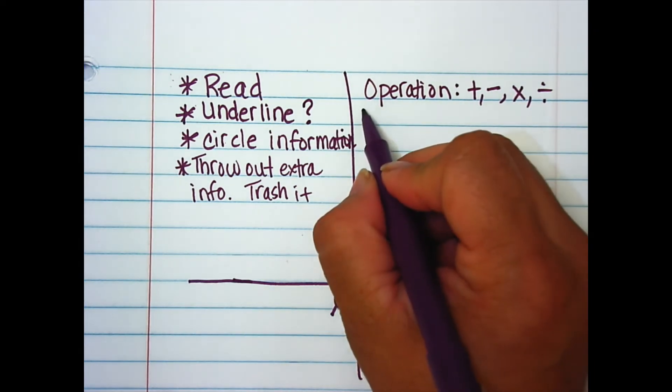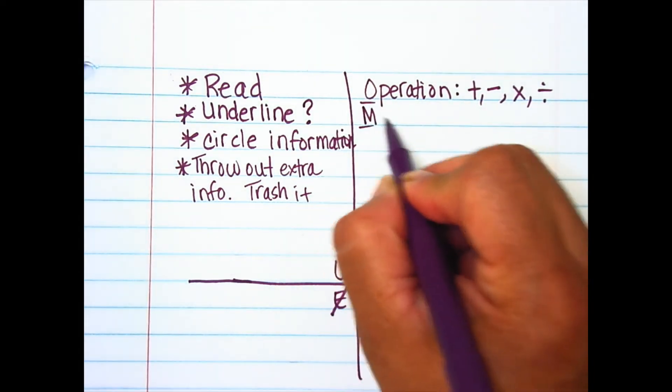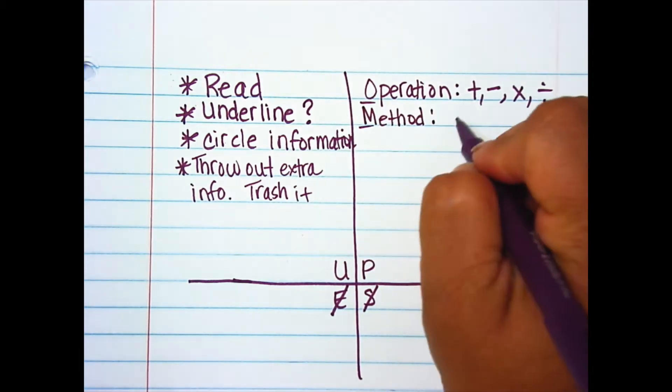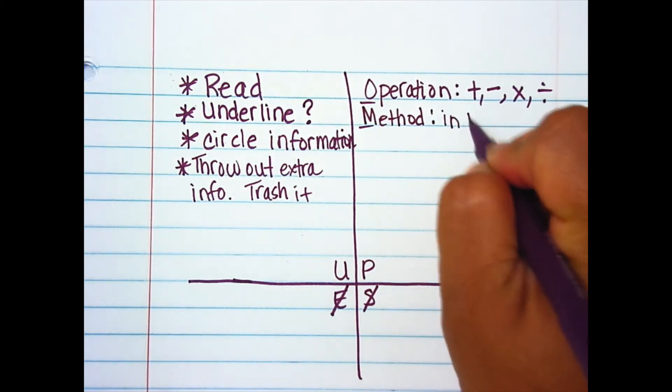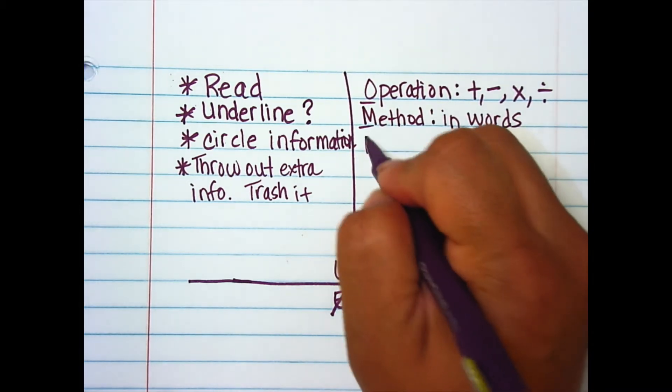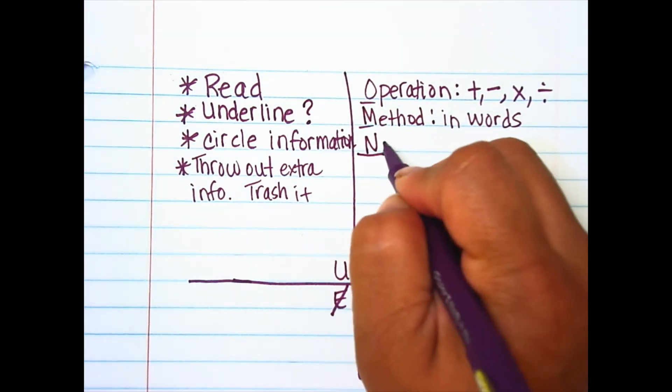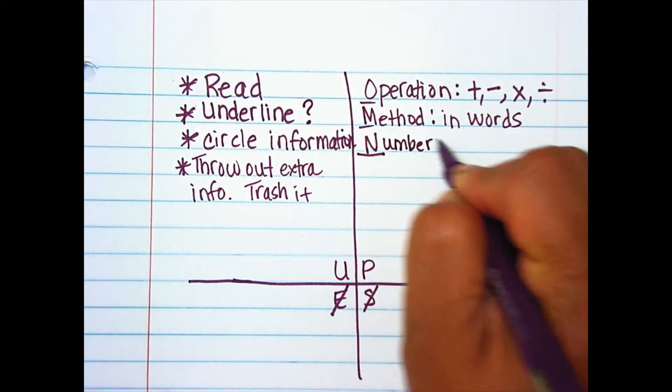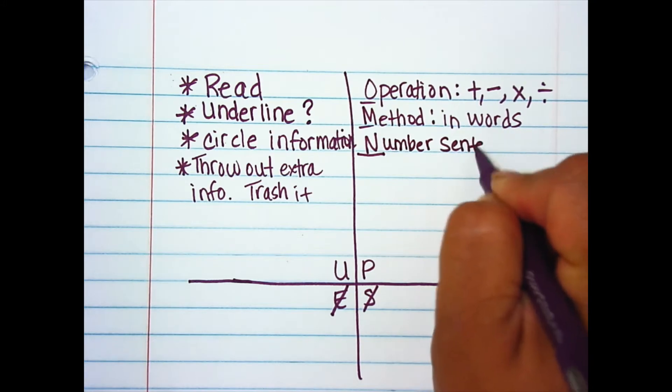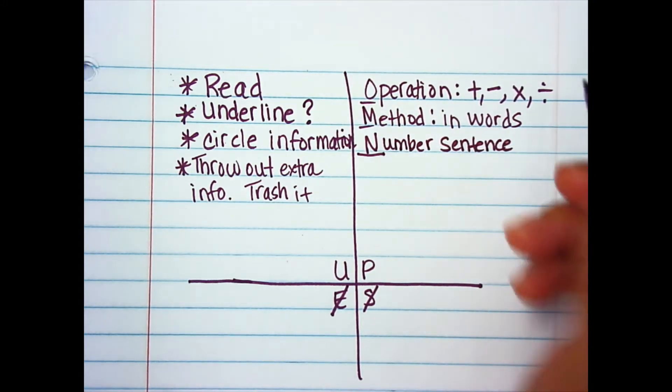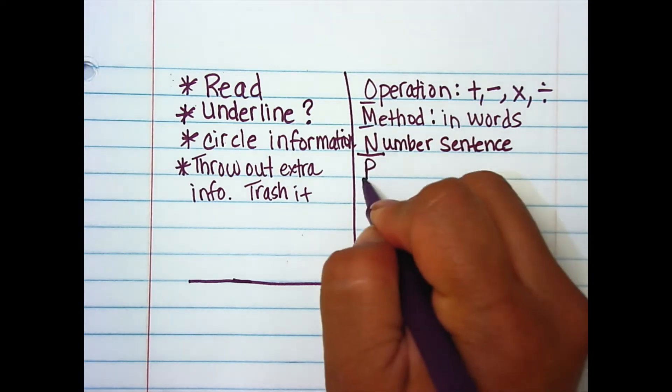In my M, that is our method. In our method, we are saying what we are going to do in words. Then we have our N, this is new, something we're adding, and N is our number sentence. So we're just going to write it in numbers.